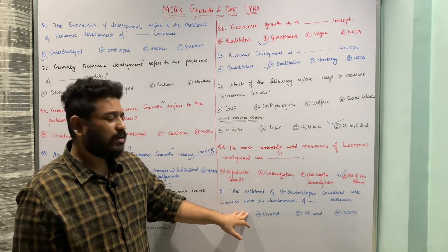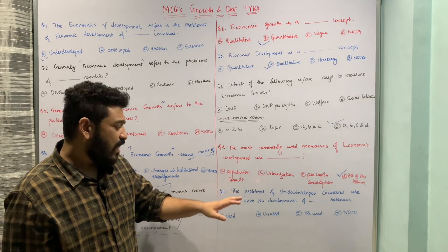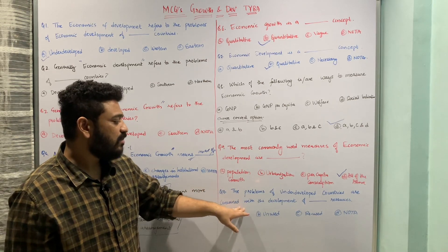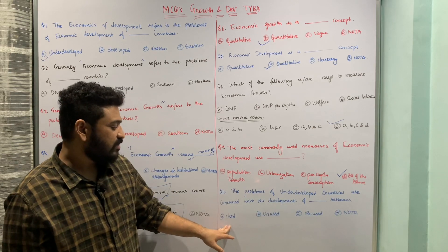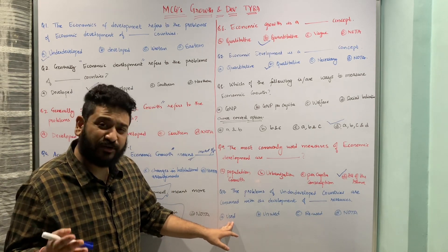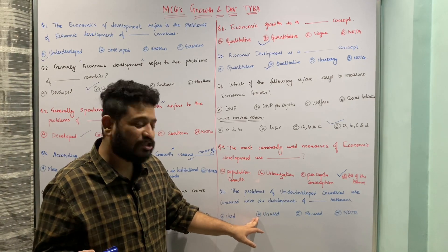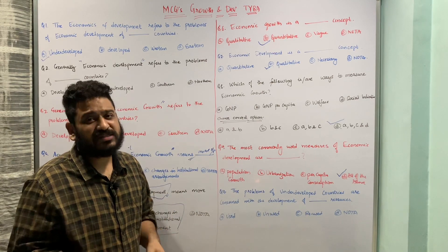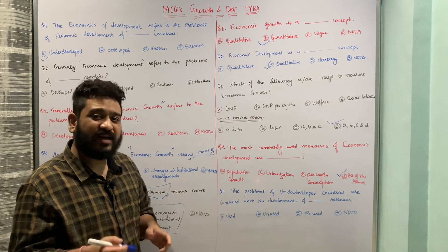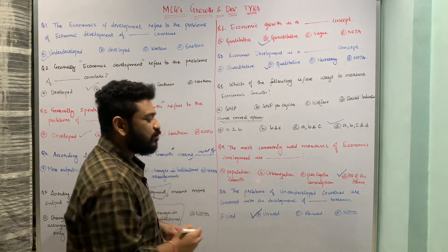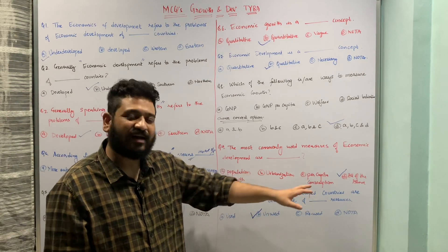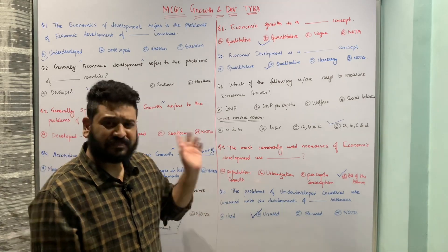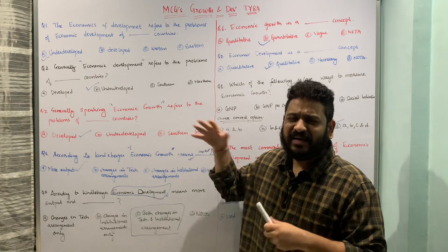The last question in this segment: 'The problems of underdeveloped countries are concerned with the development of ___ resources.' The options are: used resources, unused resources, reused resources, or none of the above. The problem of underdeveloped countries is efficiently using unused resources, so option B — unused resources — is the correct answer.